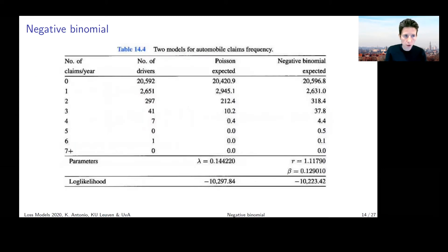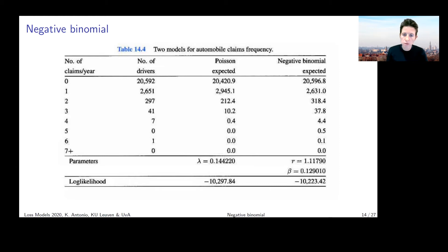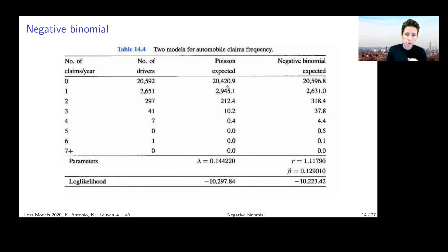Here you can see, for the example with the number of claims observed per year and the number of drivers who filed that number of claims, what the Poisson model did versus what the negative binomial model did. You can see the maximum likelihood estimates for the unknown parameters, the log-likelihood that was reached, and, under these two fitted models, what we're going to calculate next.